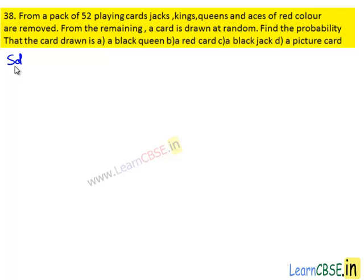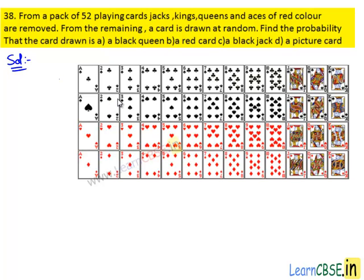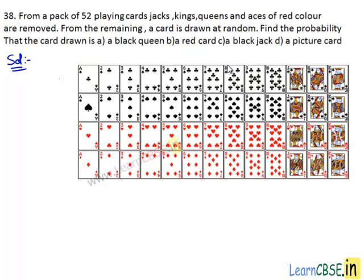Moving on to the solution. We know that a pack of playing cards consists of 52 cards which are divided into 4 suits of 13 cards each. Each suit consists of 1 Ace, 1 King, 1 Queen, 1 Jack and 9 other cards numbered from 2 to 10. The 4 suits are named as Spades, Clubs, Hearts and Diamonds.